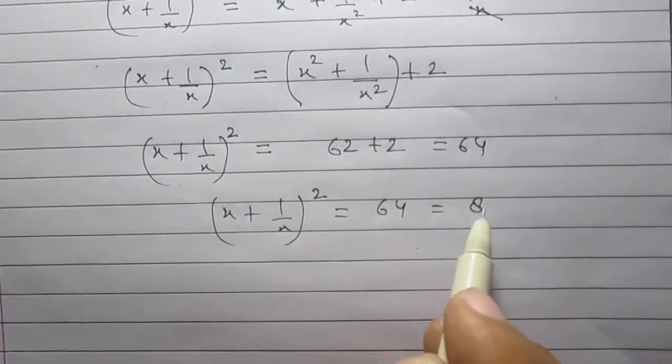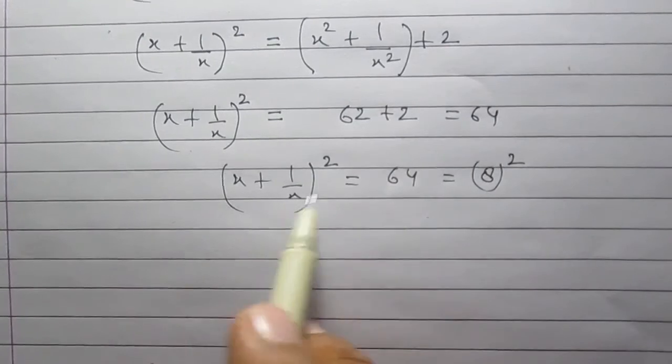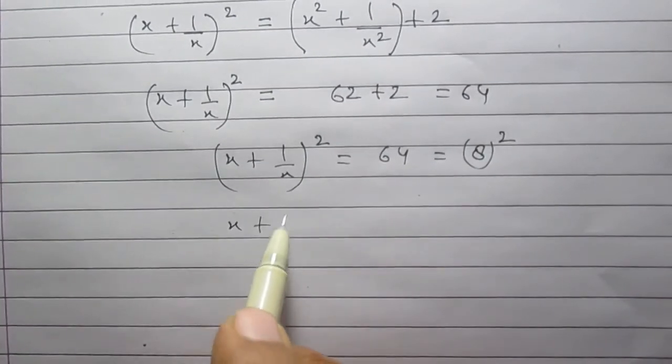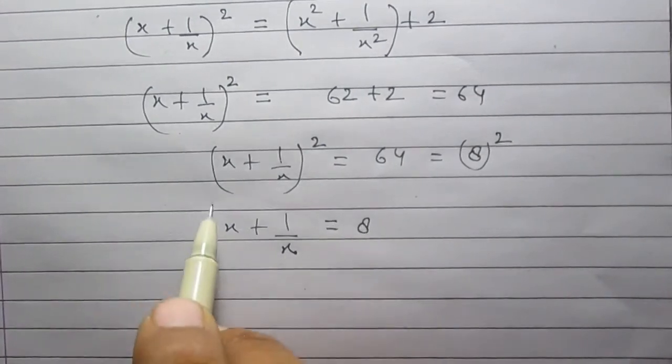So x plus 1 upon x whole square is equal to 64, which is square of 8. On comparing this relation, we will get x plus 1 upon x is equal to 8.